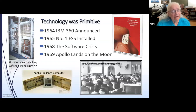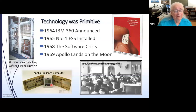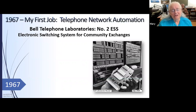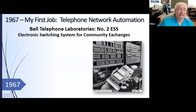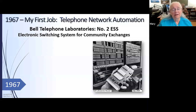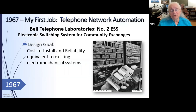Here's the Apollo guidance computer — that's what it looks like from the Computer History Museum, some big boxes and a display in the spacecraft module. In 1967, I just graduated from college and my first job was at Bell Telephone Laboratories, which had just moved to Naperville, Illinois. They were developing a switching system called the Number Two ESS — Number Two Electronic Switching System — for smaller communities. I was to work on that.